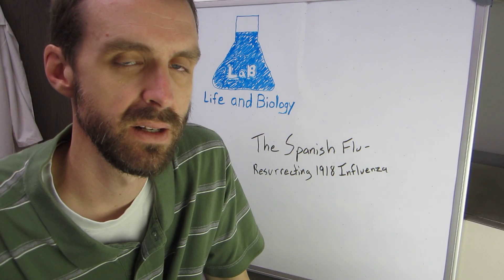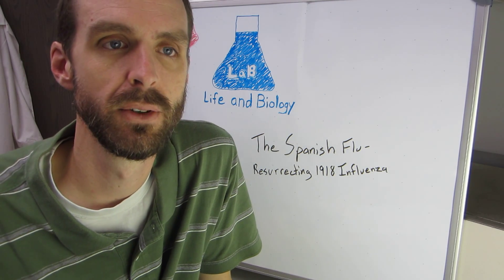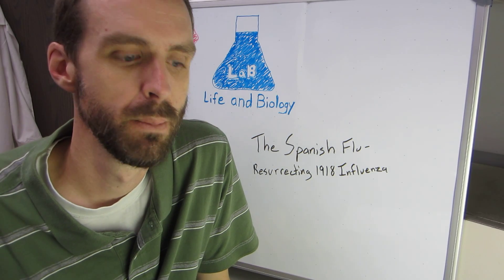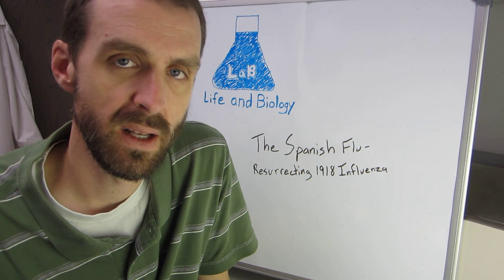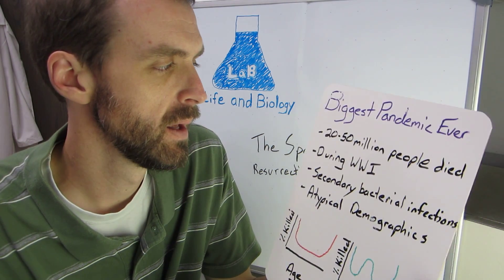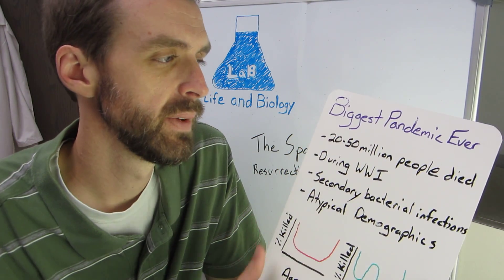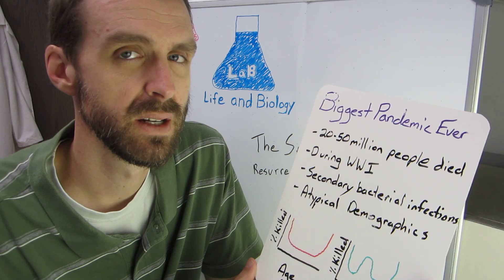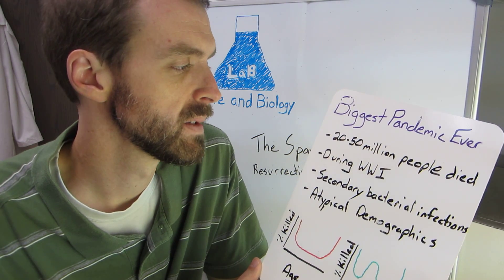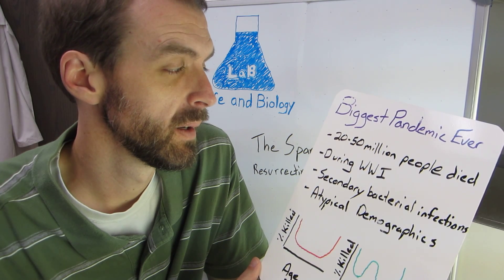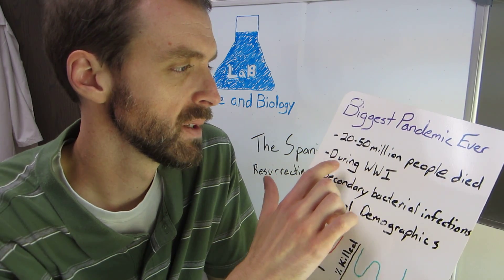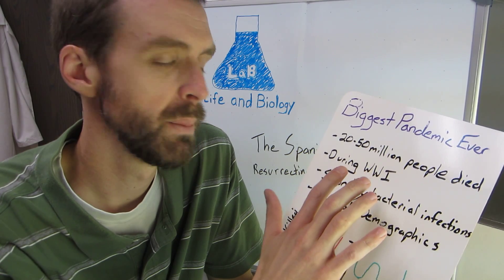A little bit about the 1918 flu. Each year we have a seasonal flu outbreak and it kills tens of thousands of people. But the 1918 flu was the biggest pandemic we've ever had. When this happened, 20 to 50 million people died. It's hard to get an exact number because it was the early 1900s, but definitely the biggest pandemic ever — the biggest number of people killed by the flu.